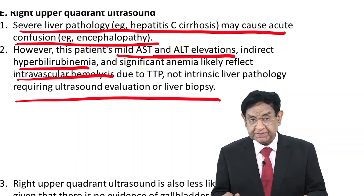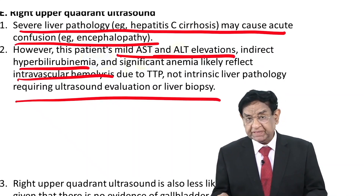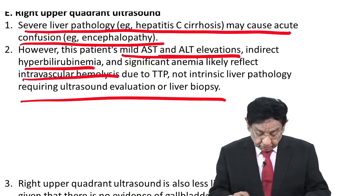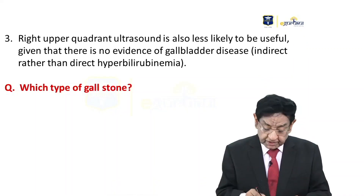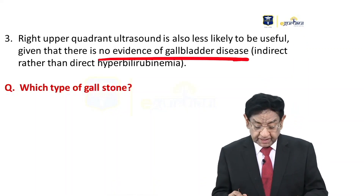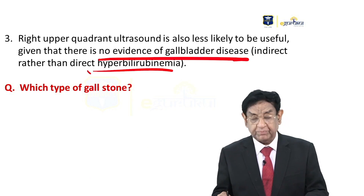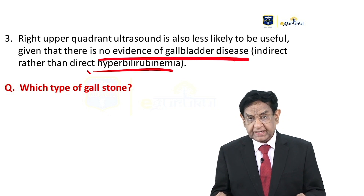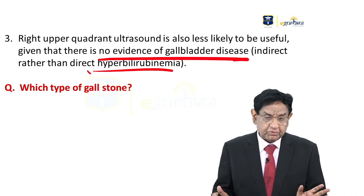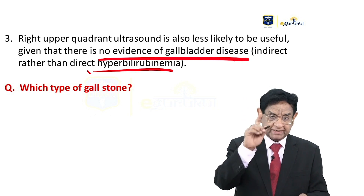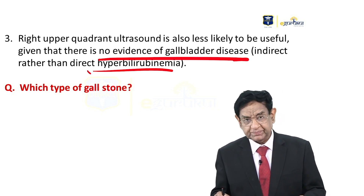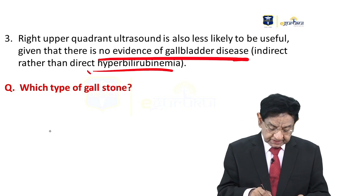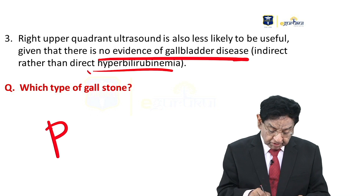Right upper quadrant ultrasound would be done later on, but the question asks for the next best step in management. There is no evidence of gallbladder disease here — in gallbladder disease it is more of a direct bilirubin level increase. Now, one more question: in hemolytic anemias, gallstones are formed — what type of gallstones? The answer is pigment gallstones.